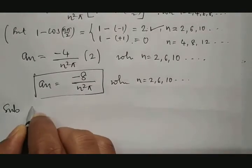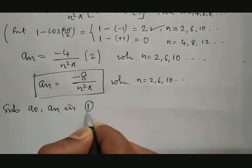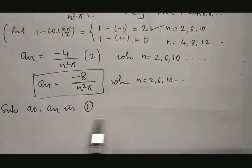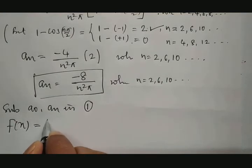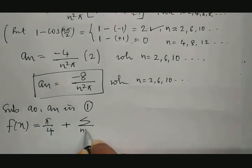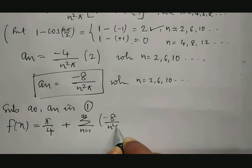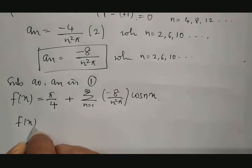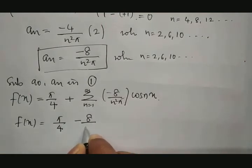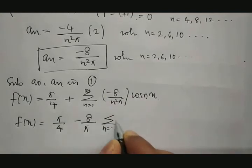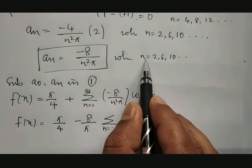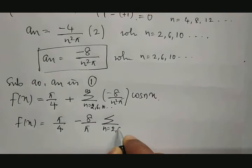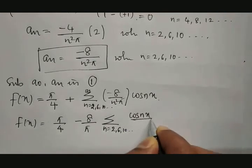Substituting the values of a naught and A_n in equation number 1 — the half range cosine series — f of x equals a naught by 2 plus summation from n equal to 1 to infinity of A_n cos nx. With a naught by 2 equal to pi by 4 and A_n equal to minus 8 by n square pi for n equals 2, 6, 10, and so on, f of x equals pi by 4 minus 8 by pi times summation of cos nx divided by n square for n equal to 2, 6, 10, and so on.